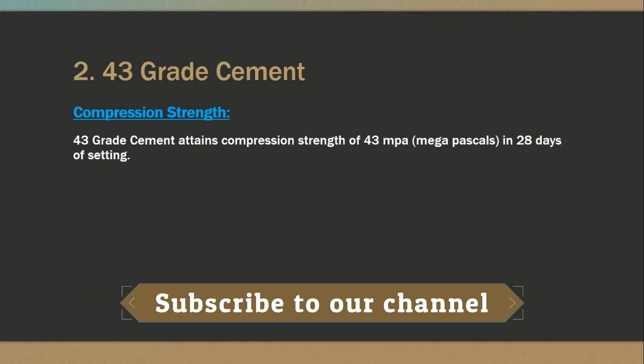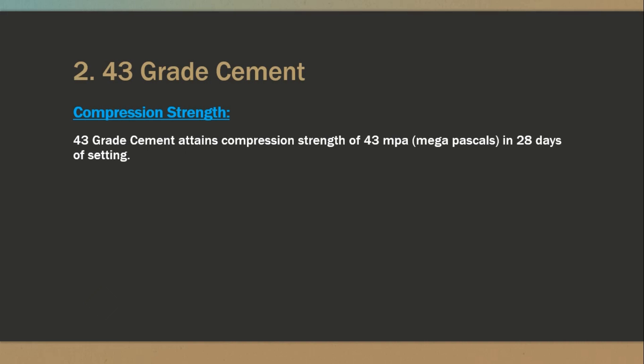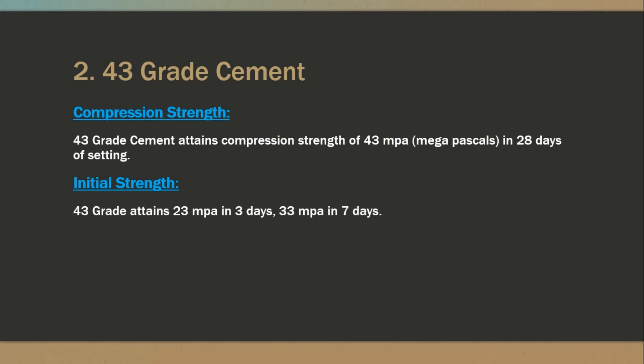The second type is 43 grade cement. 43 grade cement attains a compressive strength of 43 MPa in 28 days of setting. It should attain 23 MPa in 3 days and 33 MPa in 7 days.